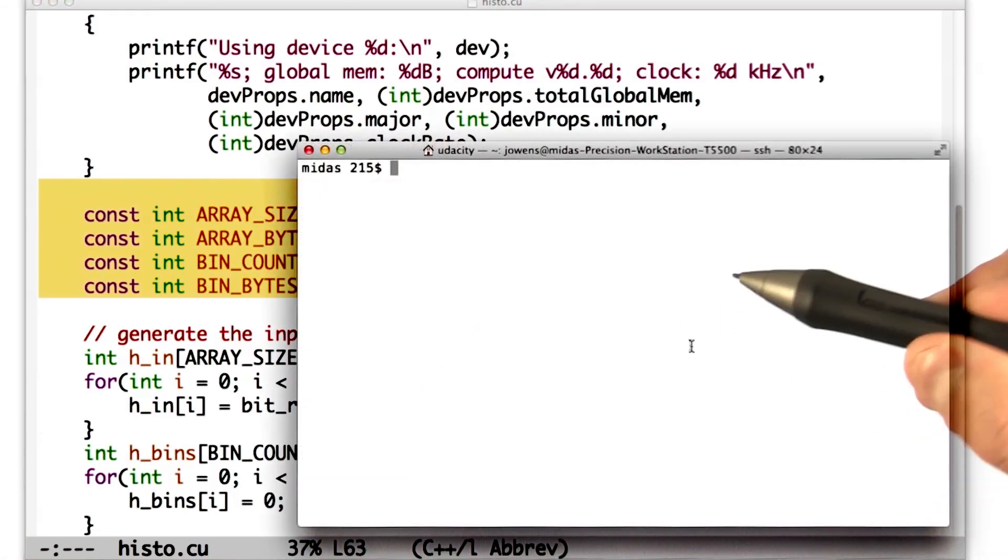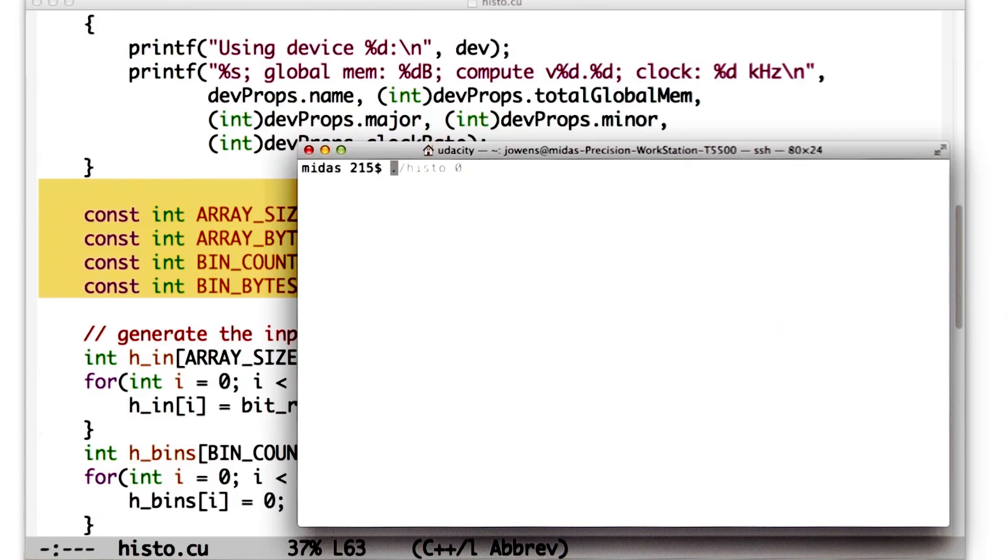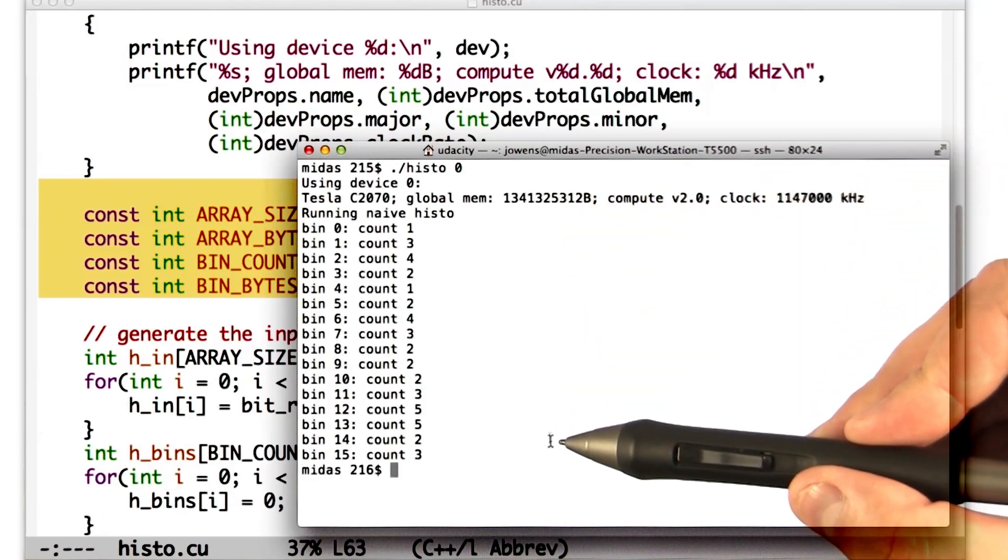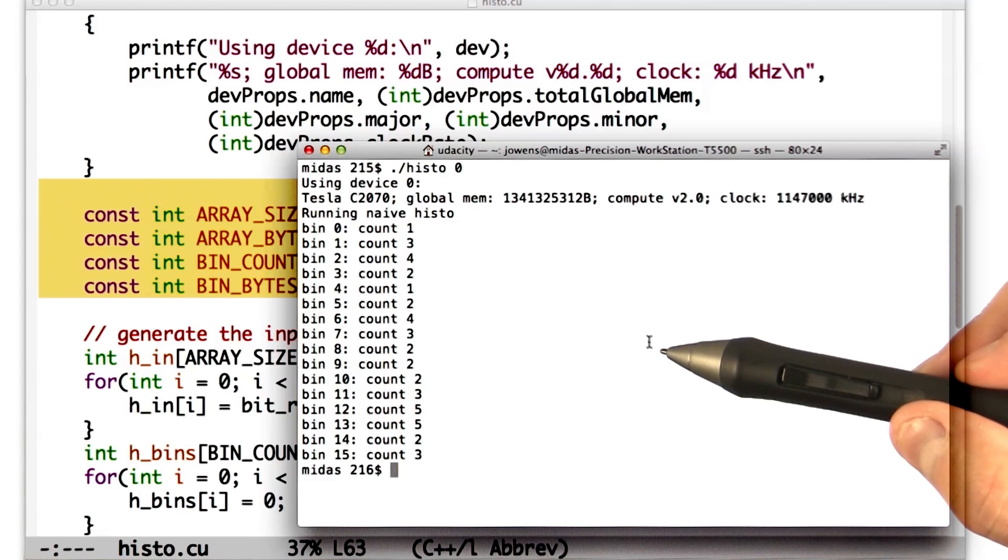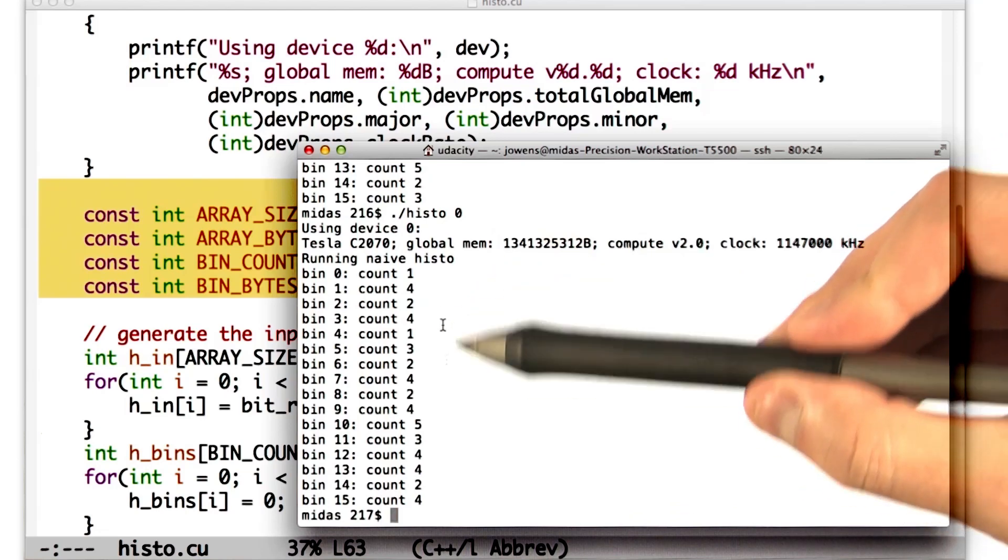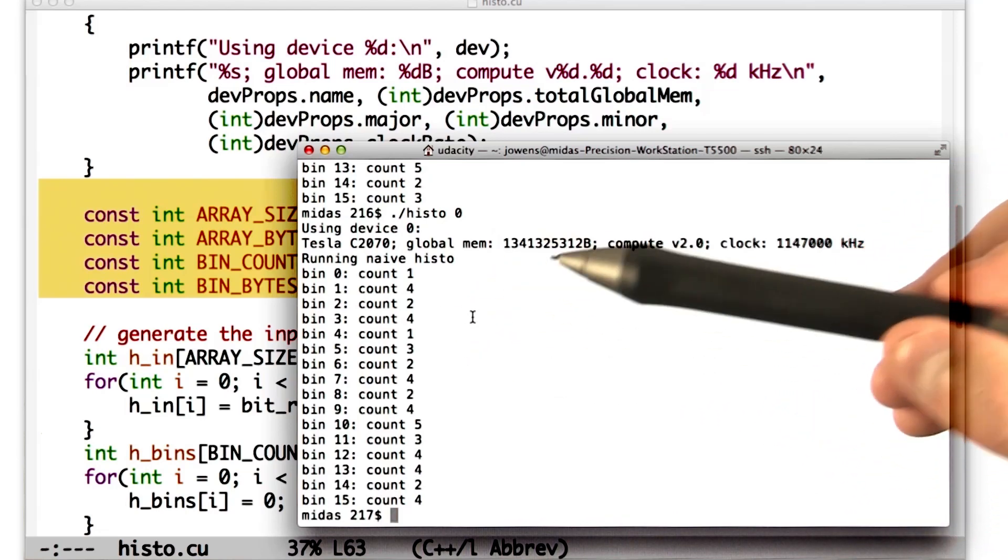I'm going to run this kernel on a workstation that I'm connected to in our lab. Let's run this histo executable. What we're going to see are the bin counts for each bin. We expected 4,096 items per bin, and we're not getting anywhere close to 4,096 items per bin. In fact, we'll run it again. If you note, these bin counts are even changing from iteration to iteration. So what's going on here?